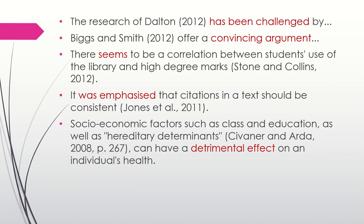Some more examples: 'Dalton has been challenged' — again, this shows that the writer doesn't agree with Dalton. 'Biggs and Smith offer a convincing argument' — the writer agrees with Biggs and Smith. 'There seems to be a correlation' — the writer is not sure, that's why he or she uses 'seems.' 'It was emphasized' — the writer points out that this is important. 'Detrimental effect' — the writer emphasizes that this has a negative impact on people's health, again showing what he or she thinks about it.